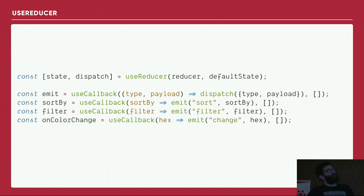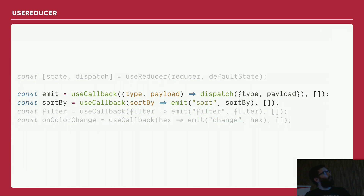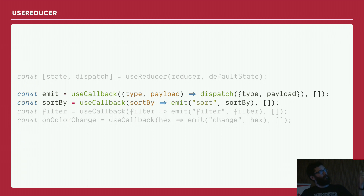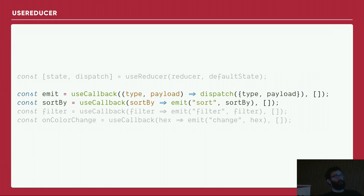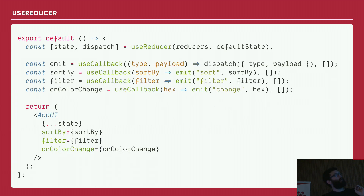With `useReducer`, the component becomes much cleaner. I have an `emit` function — a `useCallback` that dispatches — and then a `sortBy` which is a callback emitting the change I want. That's about it. All the business logic is completely abstracted from the component, and the component is nice and lean.